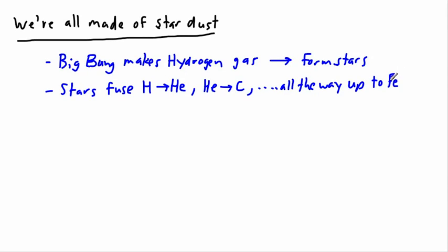Iron is written Fe. What's interesting is that stars can't—on their own, normally, naturally—they have a lot of trouble fusing anything higher than iron. In other words, they don't have enough pressure or temperature in order to make iron fuse into something else. It's not energetically favorable to do that.